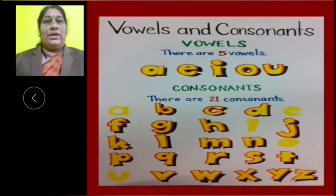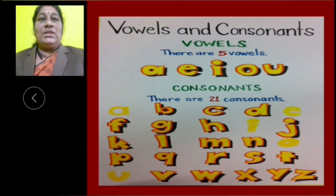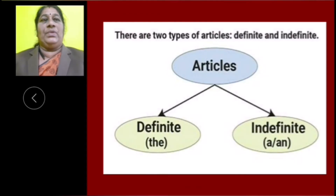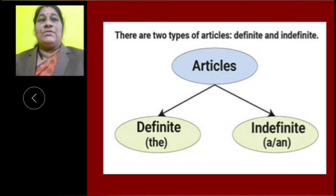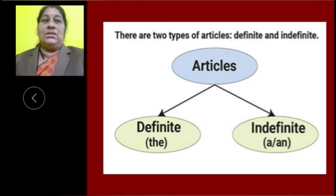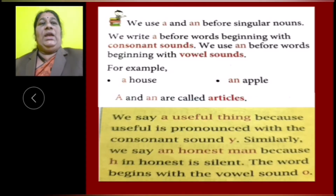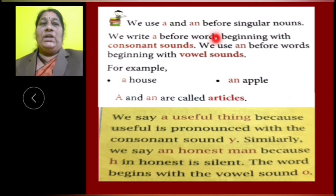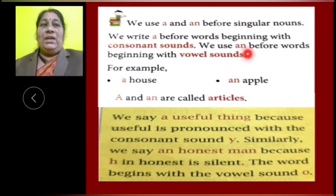I hope children, it is clear to you. Now, let us move to the articles. There are two types of articles: definite and indefinite articles. The definite article is THE. The indefinite articles are A and AN. We use A and AN before singular nouns. We write A before words beginning with consonant sounds. We use AN before words beginning with vowel sounds.